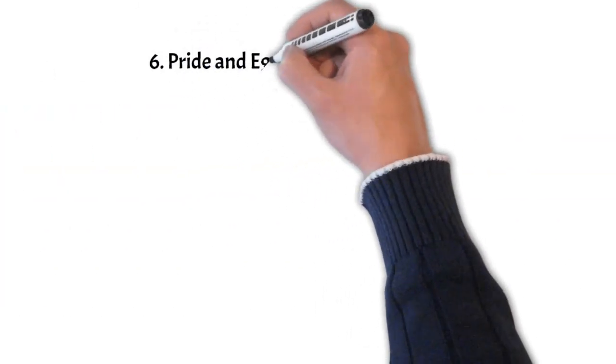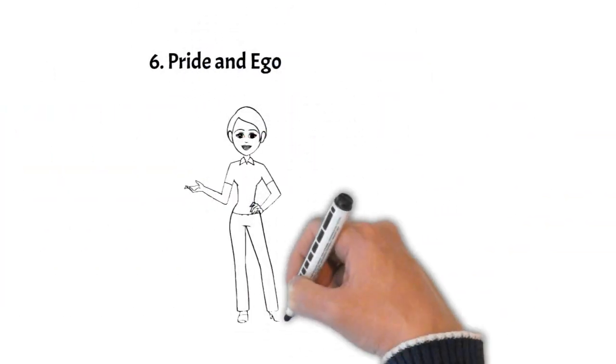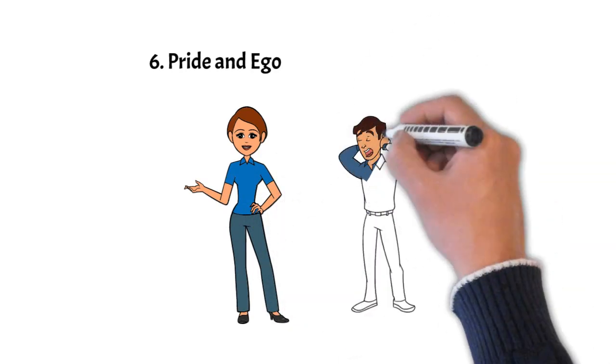Number six, pride and ego. An unhealthy type 2 may struggle with pride, thinking they know what's best for others, leading to conflicts or disputes.